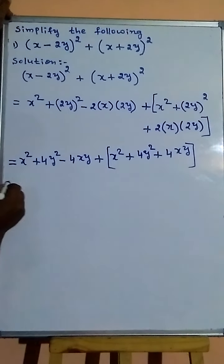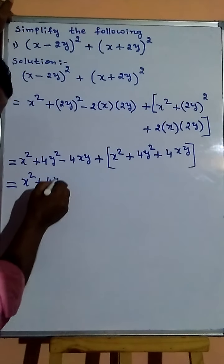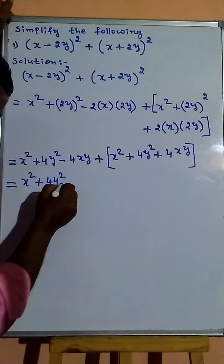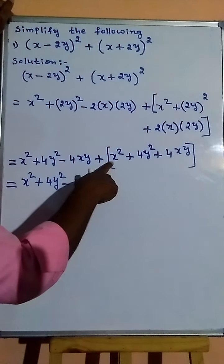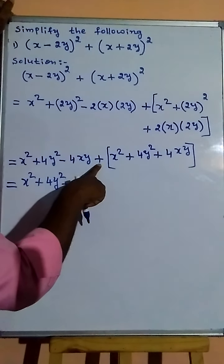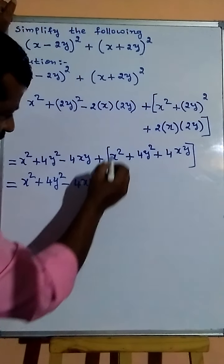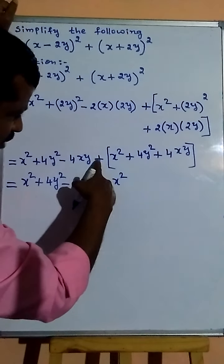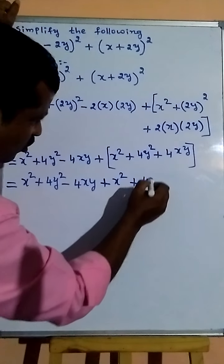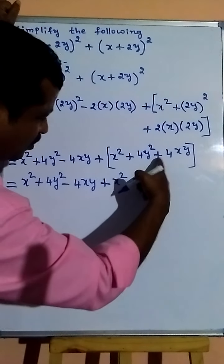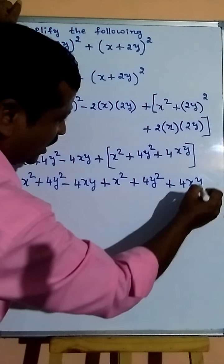Next: x squared plus 4y squared minus 4xy. Now in the bracket: plus into plus gives plus, x squared plus into plus gives plus, 4y squared, plus into plus gives plus 4xy.